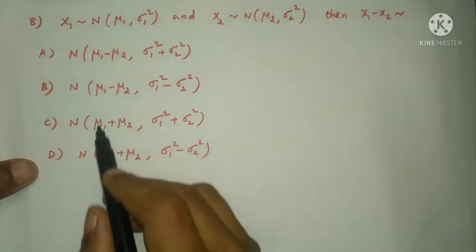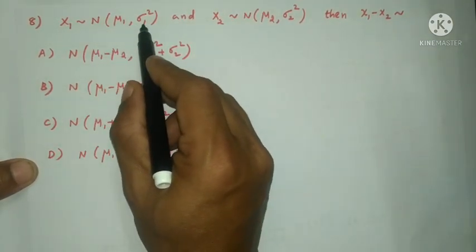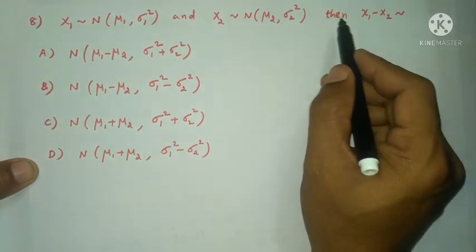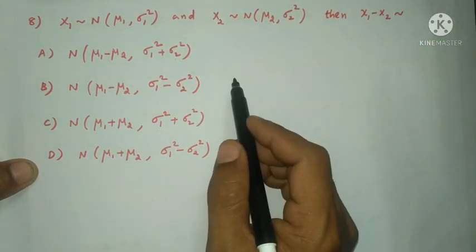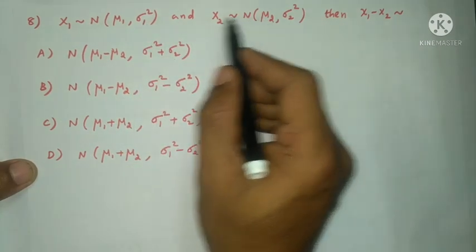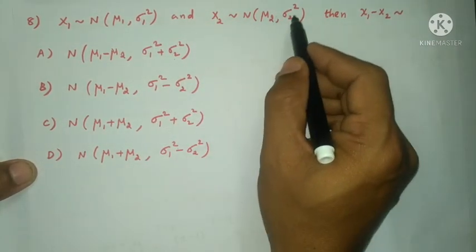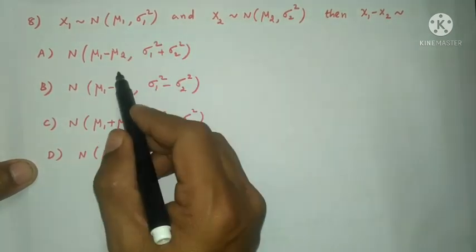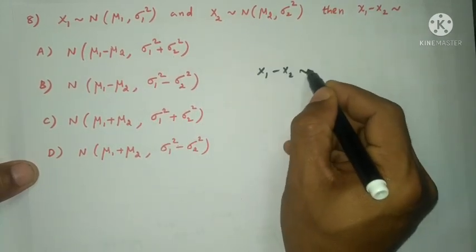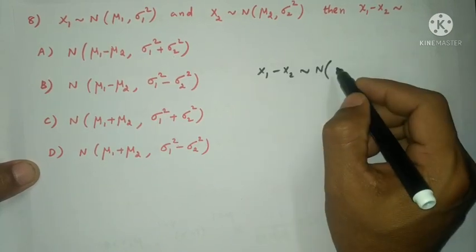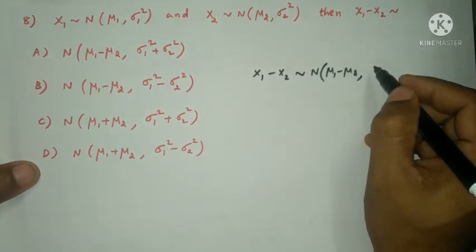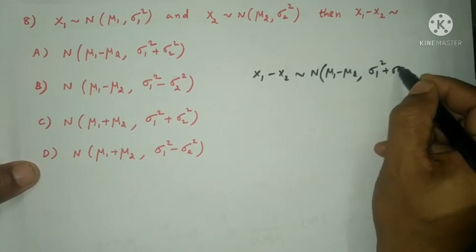Next question: x1 equal to N of mu1 comma sigma 1 square and x2 equal to N of mu2 comma sigma 2 square, then x1 minus x2 equal to. This is a normal distribution. mu1, mu2 are the means, sigma1 square, sigma2 square are the variances. x1 minus x2, the mean is mu1 minus mu2, variance is sigma1 square plus sigma2 square.